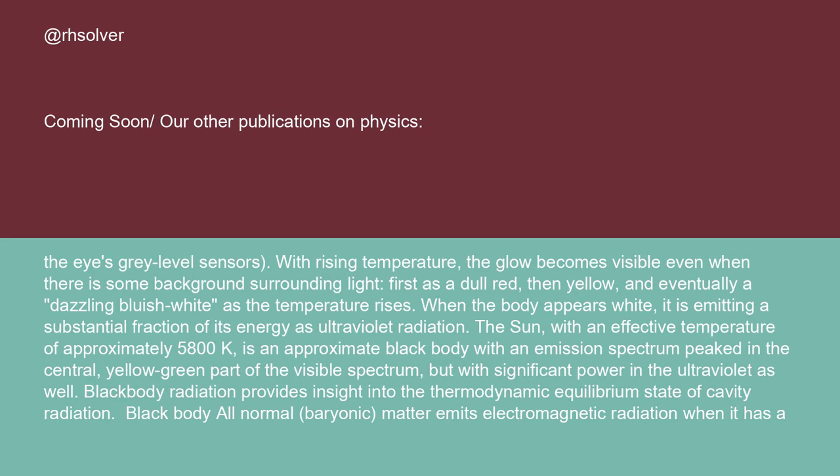With rising temperature, the glow becomes visible even when there is some background surrounding light — first a dull red, then yellow, and eventually a dazzling bluish white as the temperature rises. When the body appears white, it is emitting a substantial fraction of its energy as ultraviolet radiation.